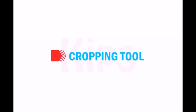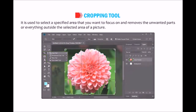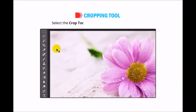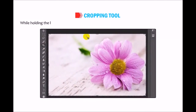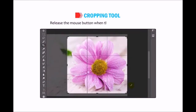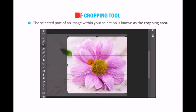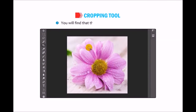Crop tool: It is used to select a specified area to focus on and removes everything outside the selected area. Open any image and select the Crop tool from the Tools panel or press C. The pointer changes to the cropping symbol. Hold the left mouse button and drag across the picture to make a rectangular selection, then release. The selected area is the cropping area; the area outside appears dark — called a shield. To finish cropping, double-click inside the selection or press Enter. The selected image will be cropped.